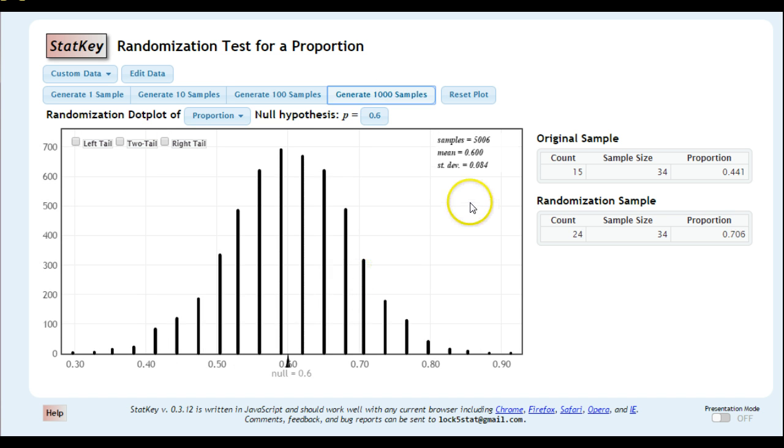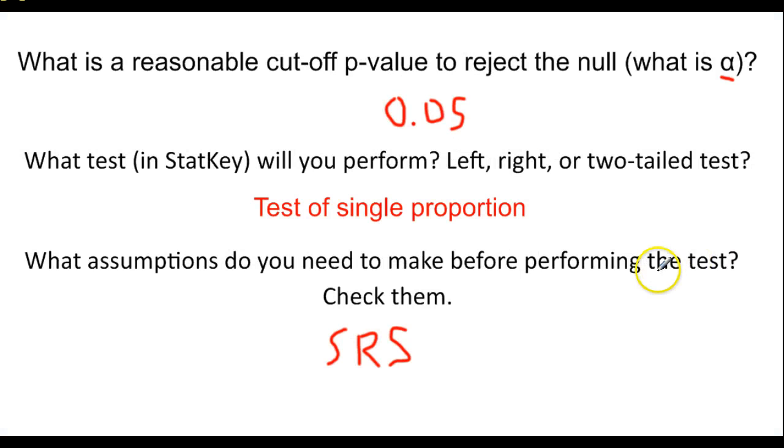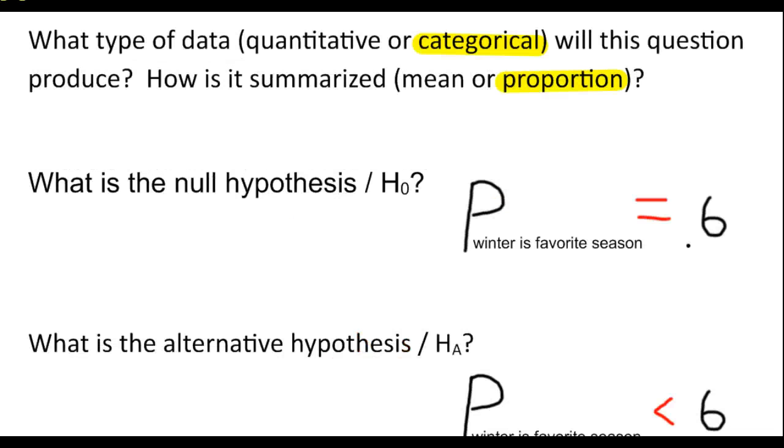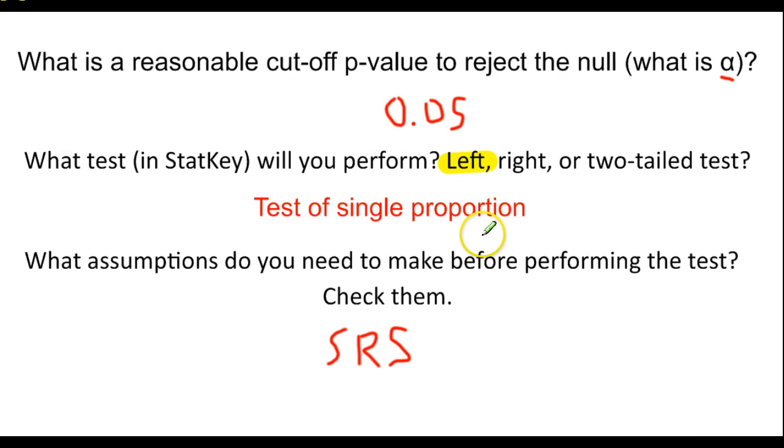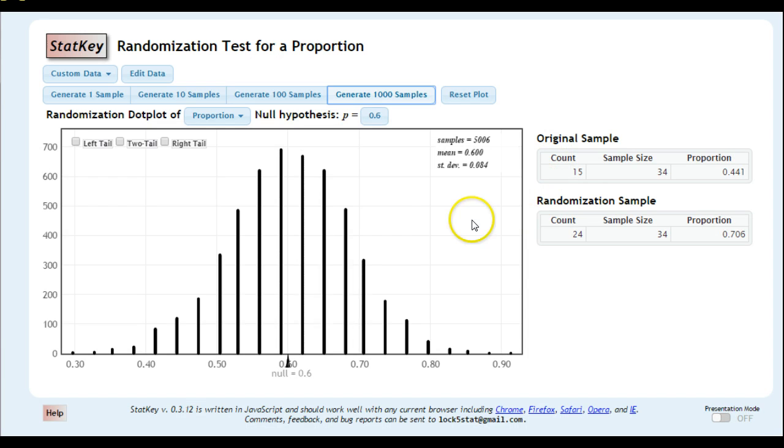And we need to decide which tail we're going to look in. So let's go back to the question we asked earlier, which test in StatKey will you perform? We said test of a single proportion. We didn't answer the second part, which is, is it a left, right, or two-tailed test? Because we are looking less than the 0.6, we are going to look in the left tail. If we are looking greater than, we look in the right tail. And if we are saying not equals, we would look in both tails and have to add up all that together. So let's go ahead and check the left tail.